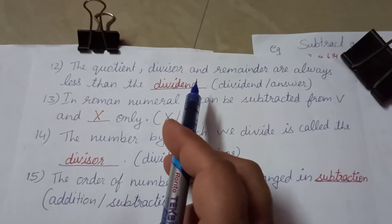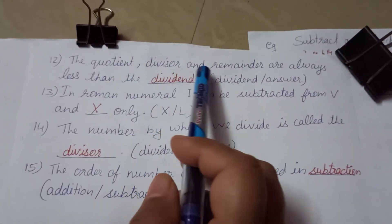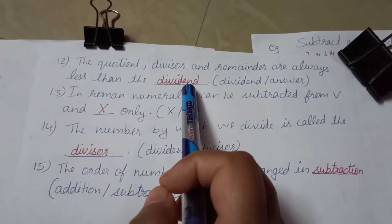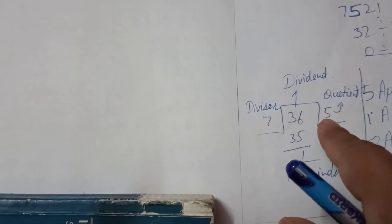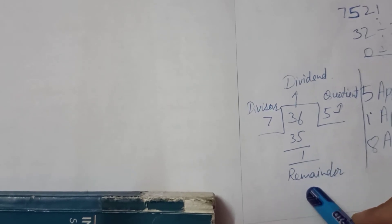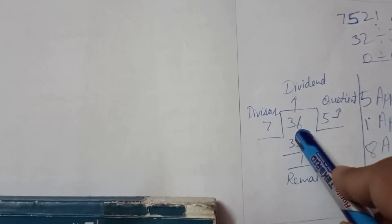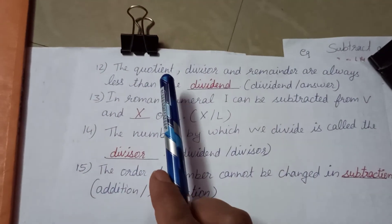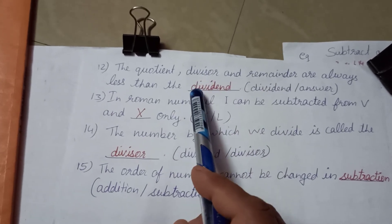The quotient, divisor, and remainder are always less than the dividend. For example, in the division 36 ÷ 7, the divisor is 7, the quotient is 5, and the remainder is 1 — all three are smaller than the dividend 36. This is true for all division problems.